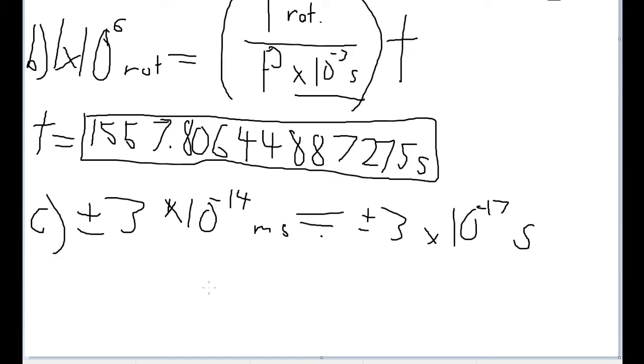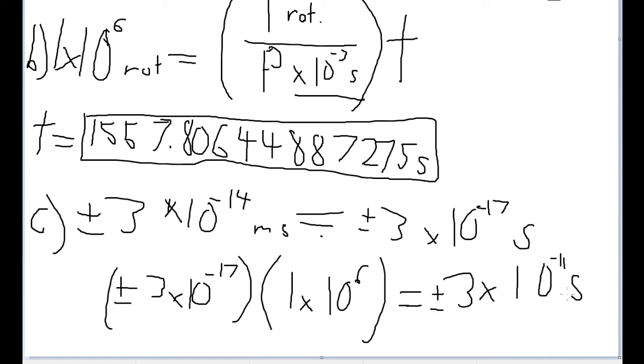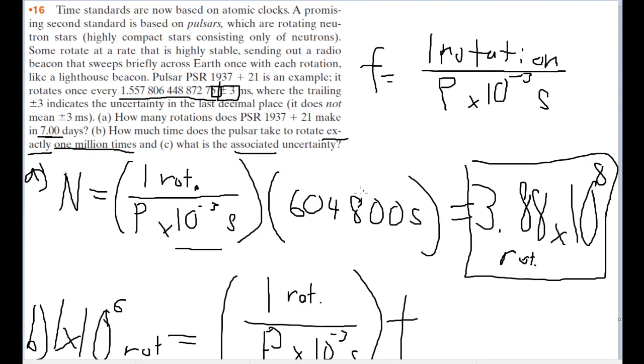So our final uncertainty, then, is going to be plus or minus 3 times 10 to the negative 17 times 1 times 10 to the 6. And this gets us an associated uncertainty for million rotations of plus or minus 3 times 10 to the negative 11 seconds. And that is it for problem number 16.